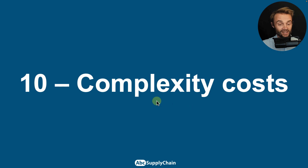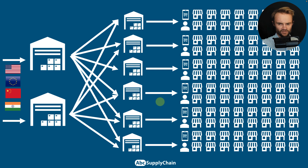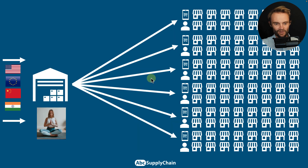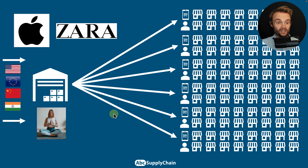Parameter ten is the complexity cost. It's not easy to calculate, but the more inventory you have, the more complex your operations become — more people managing inventory, more flows between DCs and factories. Keeping it simple is much cheaper and leads to less inventory. This is a core principle of ABC supply chain. Companies like Apple and Zara are great examples of simplicity done right.